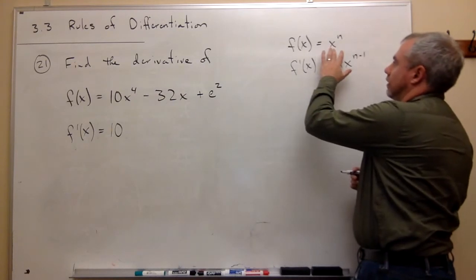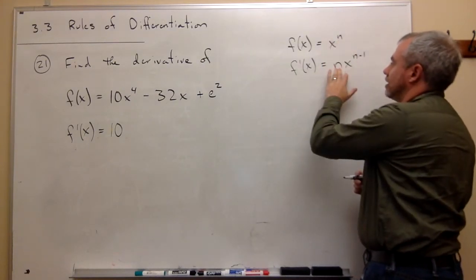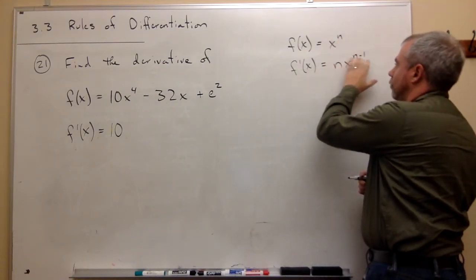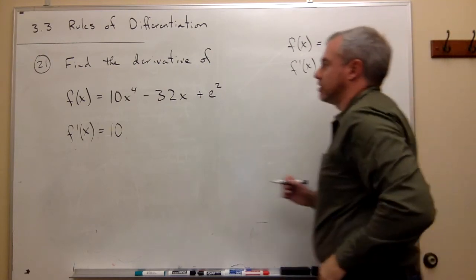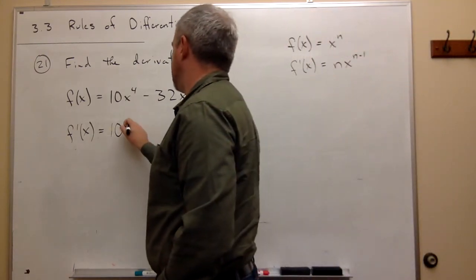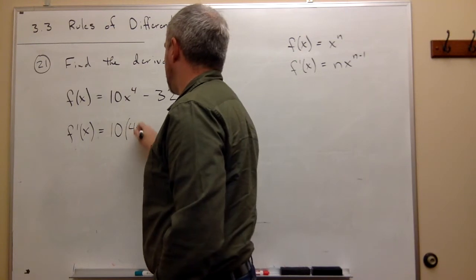But the power rule tells us that the derivative of x to the fourth is 4 times x to the 4 minus 1, so 4x cubed. So this is times 4x cubed.